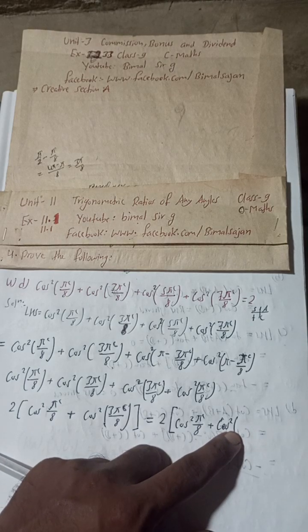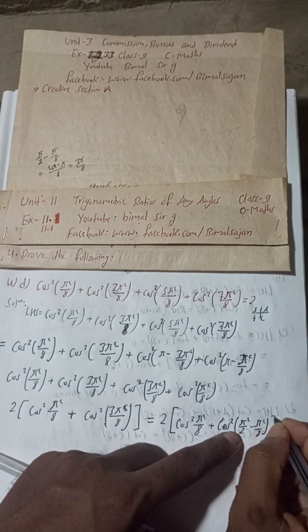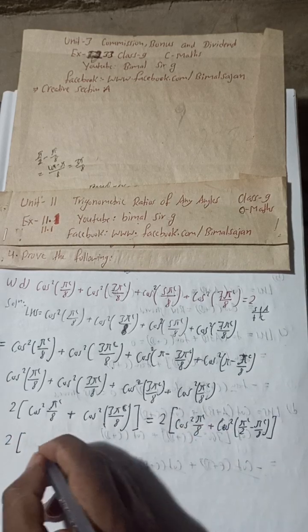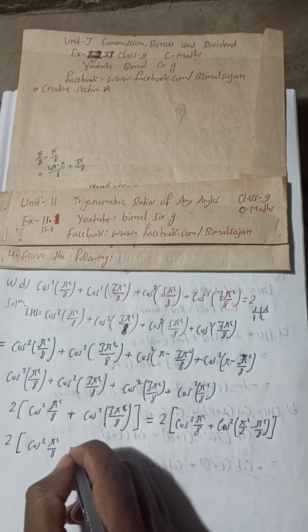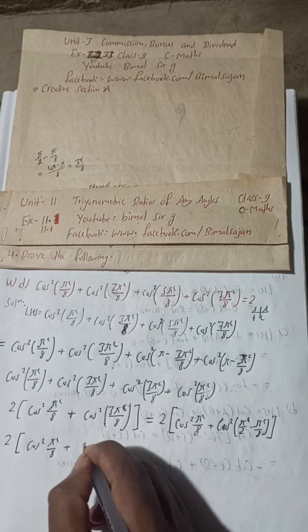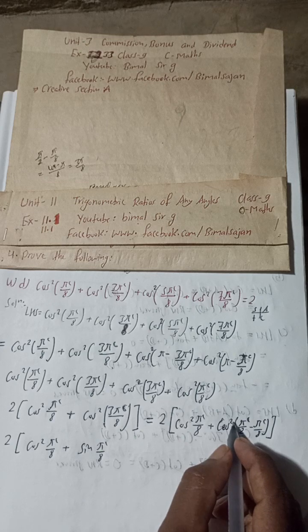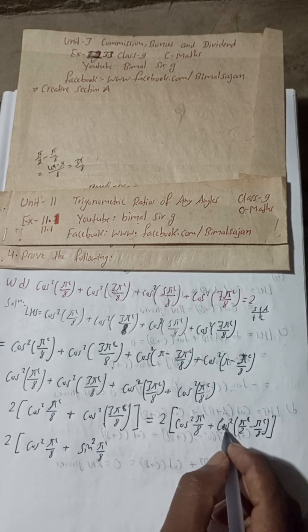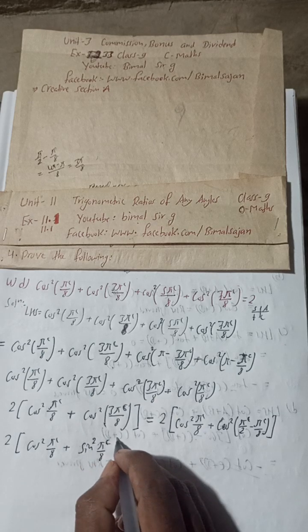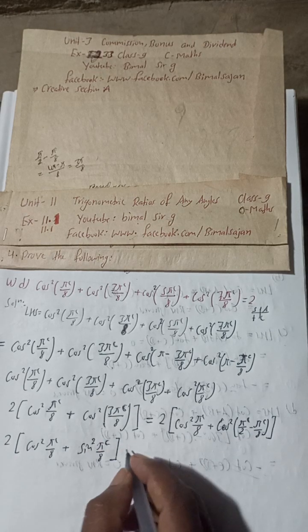This equals 2[cos²(π/8) + cos²(π/2 - π/8)]. Now π/2 means 90 degrees, and for 90 degrees this cos becomes sin. So we get 2[cos²(π/8) + sin²(π/8)].